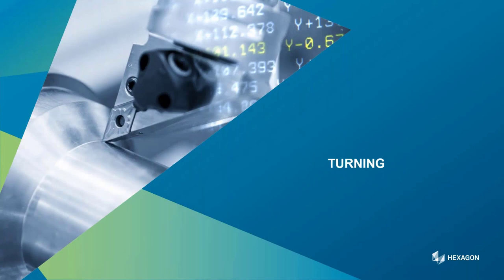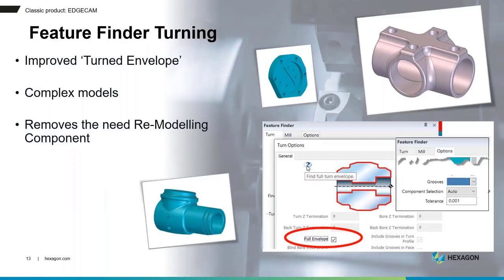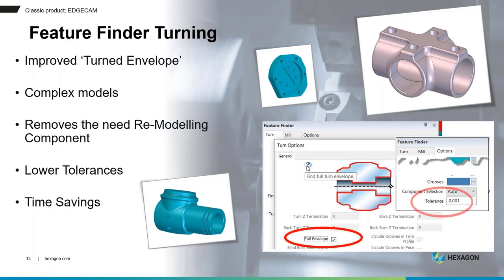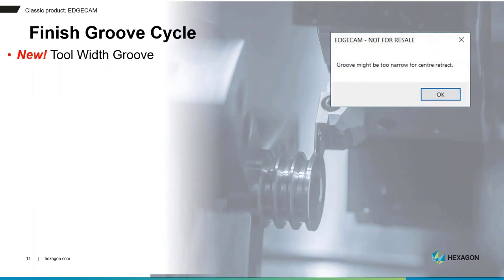Moving to turning — the first item is the Feature Finder. We've noticed issues when going through the turn envelope on more complex, larger solid models, such as parts with cross holes where geometry begins to intersect. Some customers had to remodel the part, or increase tolerance as a workaround, which caused EdgeCAM to calculate much longer. This has been enhanced in 2023.1.